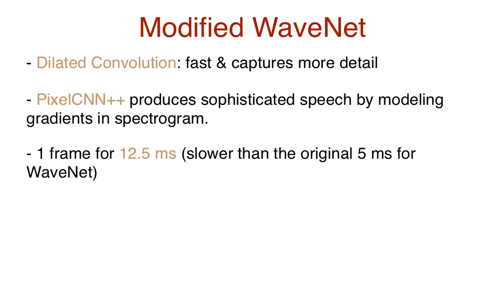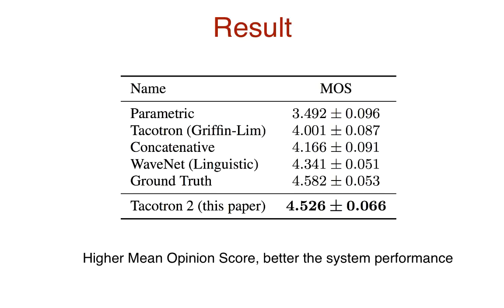WaveNet uses linguistic features, phoneme durations, and has a frame rate of 5 milliseconds. This modification, however, spreads the frames out with a 12.5 millisecond frame rate to resolve issues of predicting spectrogram frames. The resulting system significantly outperforms all other text-to-speech systems, with its MOS — mean opinion score — comparable to the ground truth.